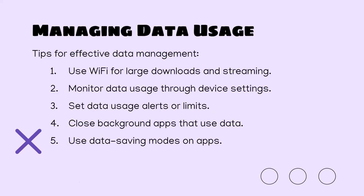It's important to manage your data usage because, as mentioned, there are caps on data. It's better to use Wi-Fi for big downloads or streaming on Netflix or YouTube, since those use a lot of data very quickly. You can monitor how much data you've used in your device settings, and most phones let you set alerts when you've used a certain amount. You can also set a limit — usually whatever your network provider specifies — and the phone will turn off your data connection at that point so you don't accidentally go over.